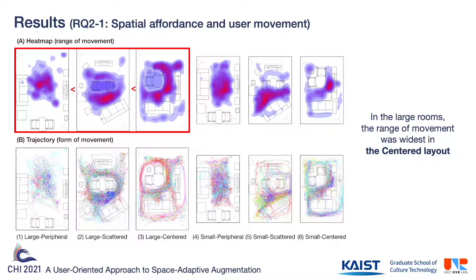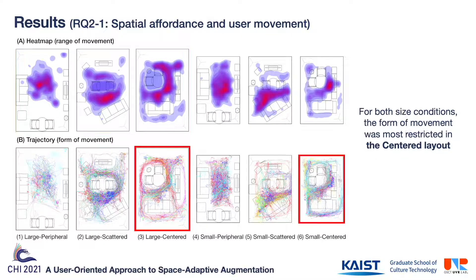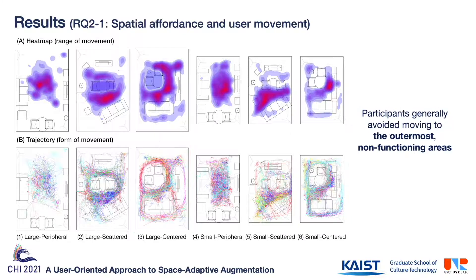Regarding movement, the heatmap showed that in the large rooms, the range of movement was widest in the centered layout. In both size conditions, the form of movement as represented by the accumulated trajectories was also most restricted in the centered. In addition, participants generally chose not to venture out to the outermost, non-functioning areas of the rooms.